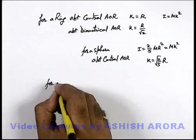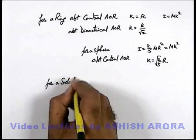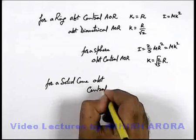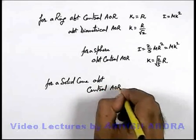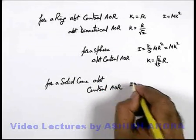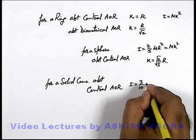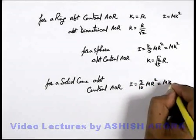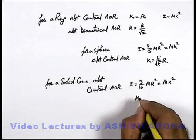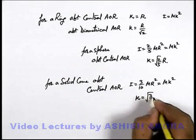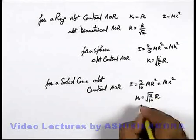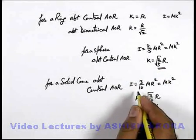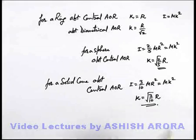For a solid cone about its central axis of rotation, the moment of inertia is written as (3/10)mr². We equate this to mk², so the radius of gyration of a cone about the central axis of rotation is √(3/10) · r. This is the way we analyze radius of gyration and its relation with moment of inertia.